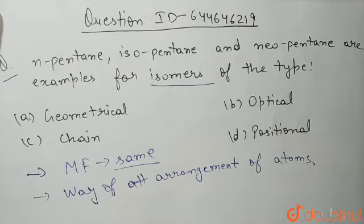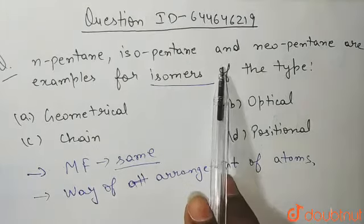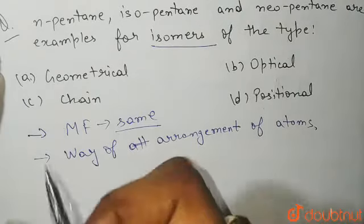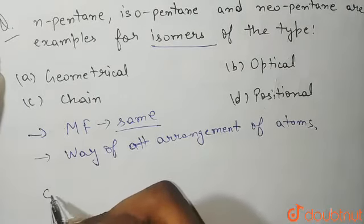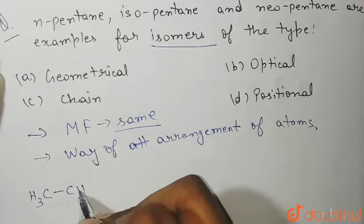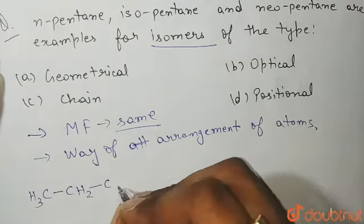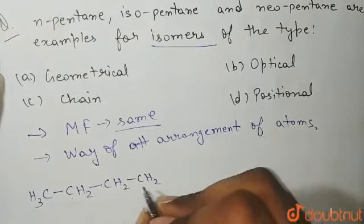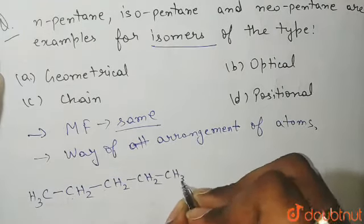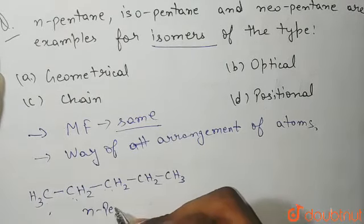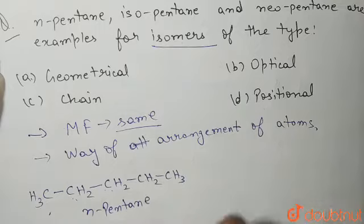Let's draw their structures. First is N-pentane. N-pentane is a normal chain having 5 carbon atoms: CH3–CH2–CH2–CH2–CH3, numbered 1 through 5. This is your N-pentane.